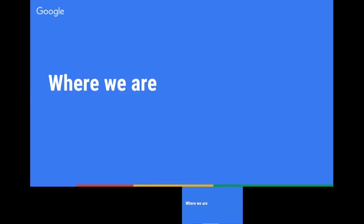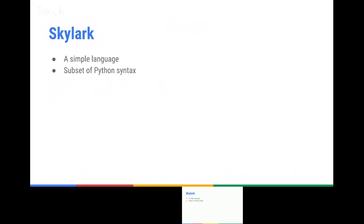Skylark is designed to be a simple language to extend Bazel. The language is used in both BUILD files and .bzl files. The syntax is a subset of Python, so it should be familiar to most people. It is thread-safe by design — unlike many languages, whenever a data structure is shared, it gets frozen and becomes immutable. This enables us to evaluate a lot of code in parallel across many threads and reuse the results.